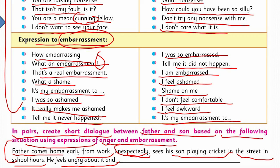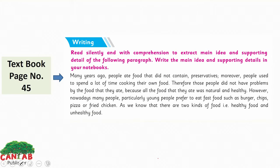The dialogue form — like we have seen in Unit 4 with Zark and his mother — what was the dialogue form? Conversation. So you have to create a dialogue form for father and son, and you have to show the expressions of anger and embarrassment. This is your writing section on page number 45.